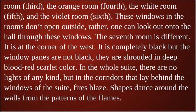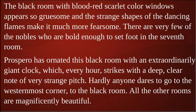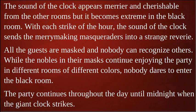The seventh room is different. It is at the corner of the west, completely black, but the window panes are not black — they are shrouded in deep blood-red scarlet color. Throughout the whole suite there are no lights, but in the corridors behind the windows, fires blaze, and shapes dance around the walls from the patterns of the flames. The black room with scarlet windows appears so gruesome, and the dancing flames make it much more fearsome. Very few nobles are bold enough to set foot there. Prospero has also placed an extraordinary giant clock in this black room, which every hour strikes with a deep, clear note of very strange pitch.